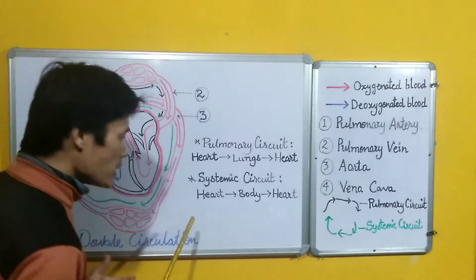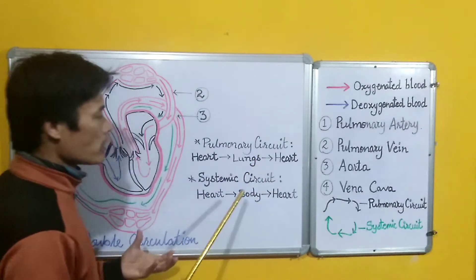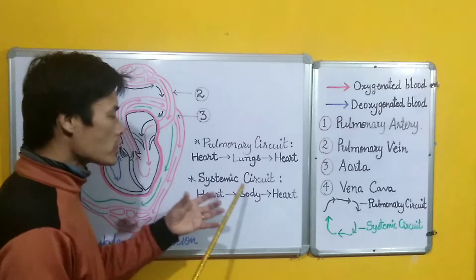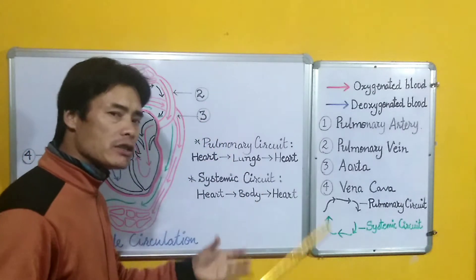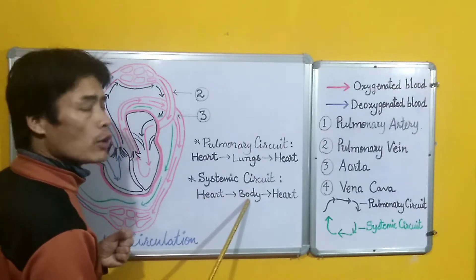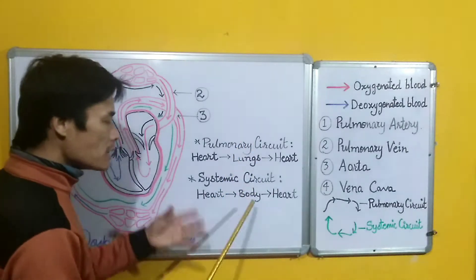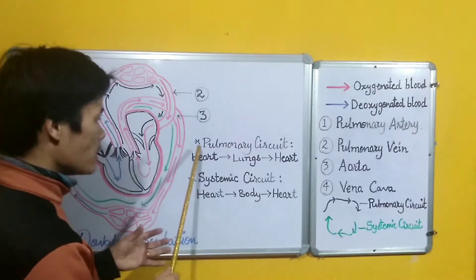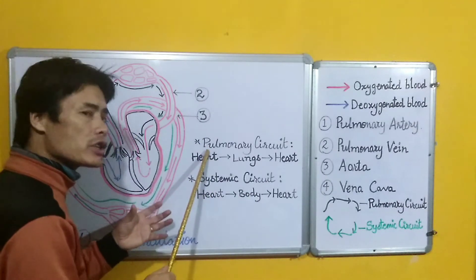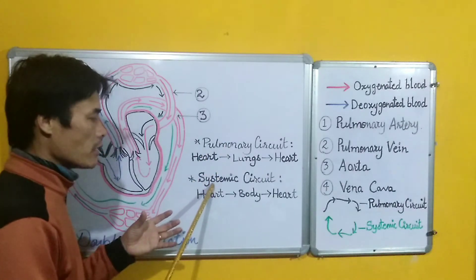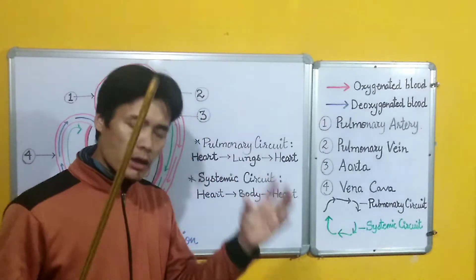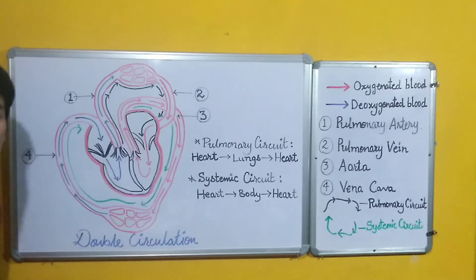The other kind of circulation is called systemic circulation. Here the blood flows from the heart to the different organs and organ systems of the body, and then from those systems the blood is taken back to the heart. These two circulations — pulmonary and systemic — together make one complete circulation of blood in the body, which is referred to as double circulation.